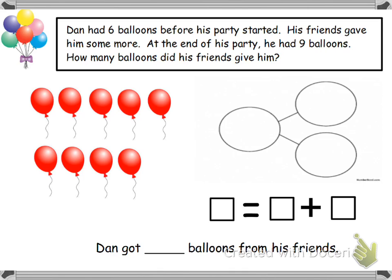Okay, so I'm going to read the word problem. It says, Dan had six balloons before his party started. His friends gave him some more. At the end of his party, he had nine balloons. How many balloons did his friends give him? Okay, read again. Dan had six balloons before his party started. His friends gave him some more. At the end of his party, he had nine balloons. How many balloons did his friends give him?